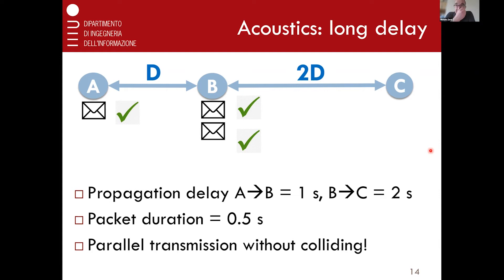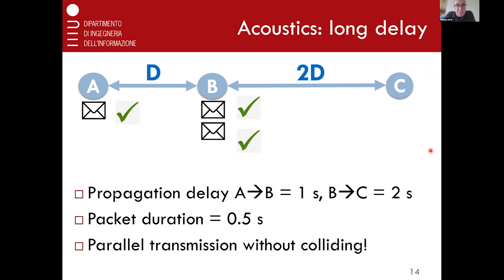Another thing about long delays is that traditional MAC protocols used in radio, like carrier sense multiple access or Wi-Fi, rely on carrier sensing — the assumption is that what I hear now is what it is now. In this kind of scenario, what I hear now may have happened a few seconds earlier, so if I react to that, it's much too late. Other techniques may have to be developed. There's also a near-far issue — if two packets arrive at the receiver with different received power, you may still correctly decode the stronger one, or even use interference cancellation.